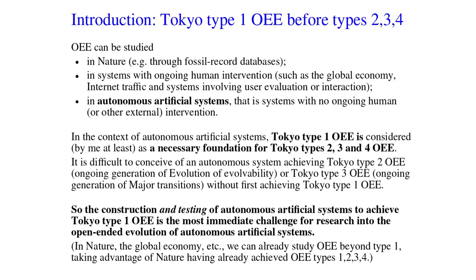Open Ended Evolution can be studied in nature, in systems with ongoing human intervention, and in autonomous artificial systems — that is, systems with no ongoing human or other external intervention. In the context of autonomous systems, Tokyo Type 1 Open Ended Evolution is considered, by me at least, as a necessary foundation for Types 2, 3, and 4. It's difficult to conceive of an autonomous system achieving Tokyo Type 2 — the ongoing evolution of evolvability — or Type 3 — ongoing generation of major transitions — without first achieving Tokyo Type 1. So the construction and testing of autonomous artificial systems to achieve Type 1 is the most immediate challenge, at least for open-ended evolution research in autonomous artificial systems.